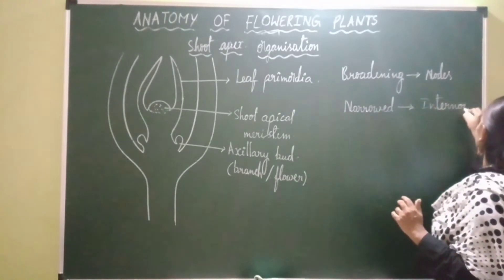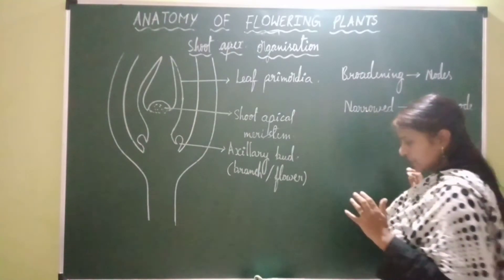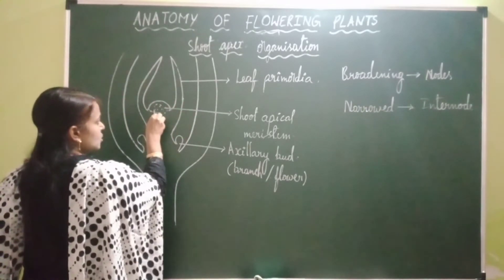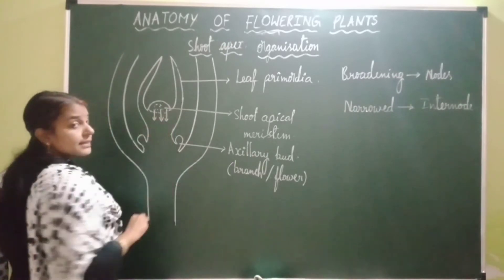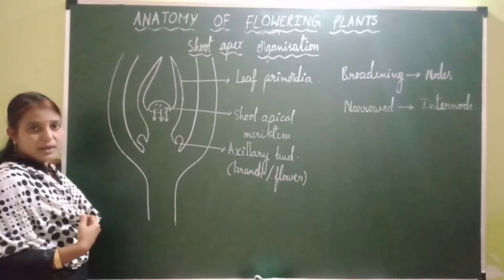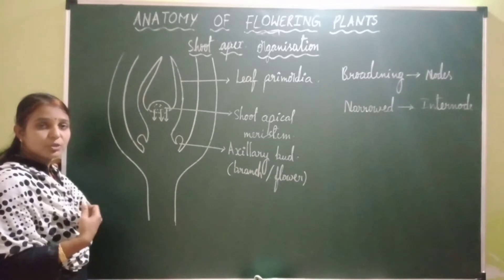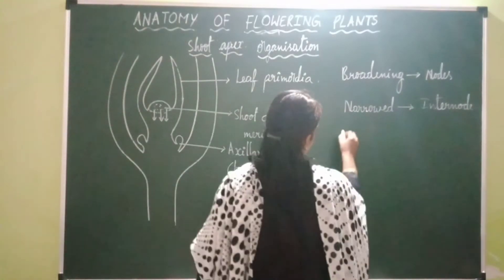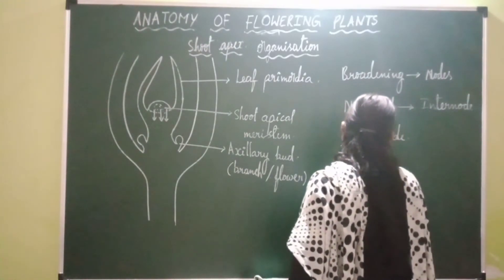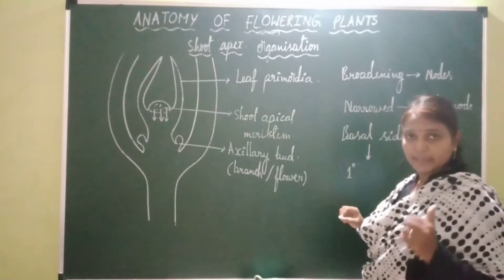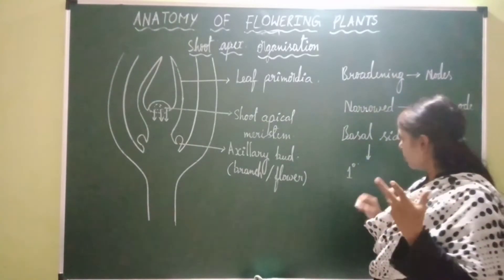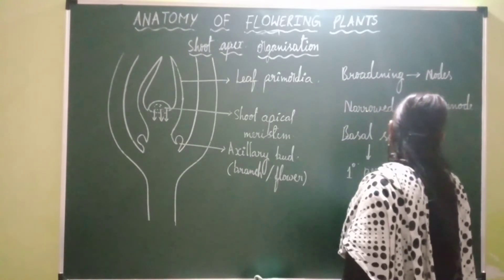The shoot apical meristem also cuts off cells towards the lower side — the basal side. The cells cut off towards the basal side develop into primary permanent tissues, which include epidermis, cortex, pericycle, primary xylem, primary phloem, and pith.